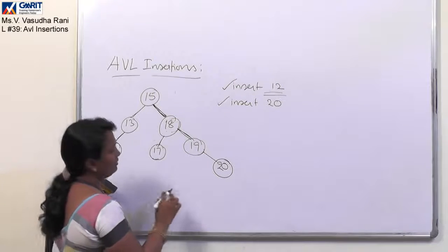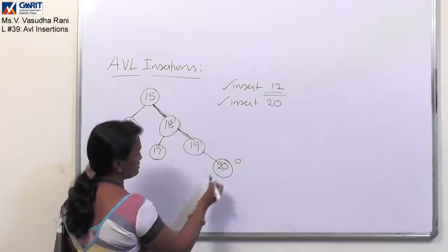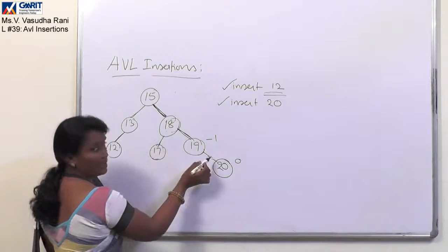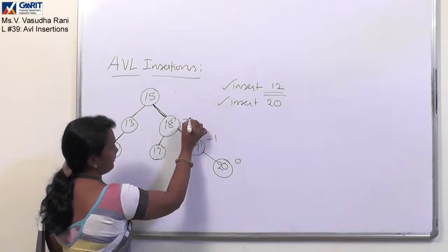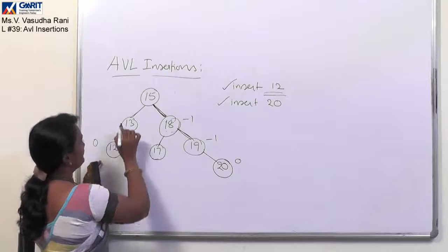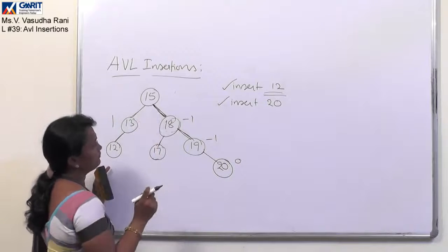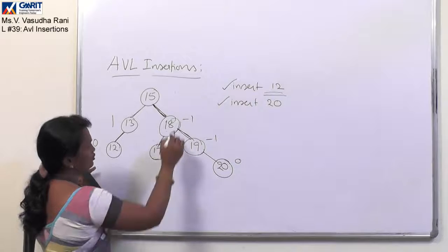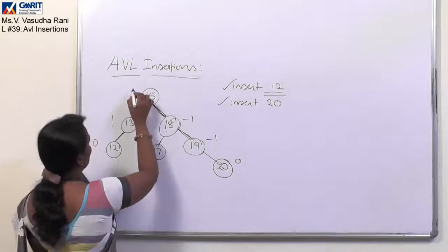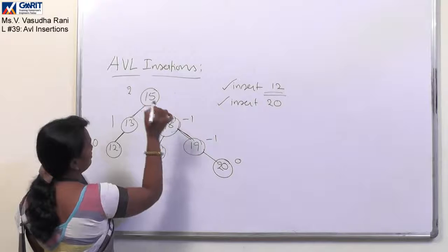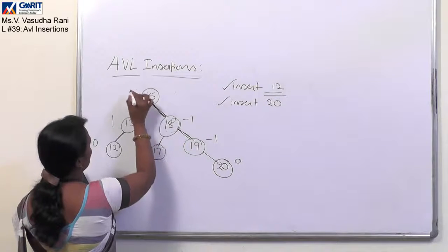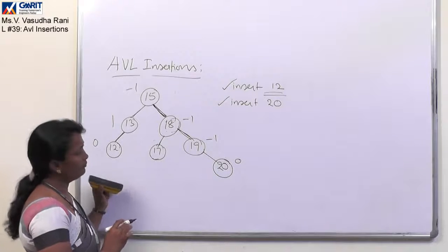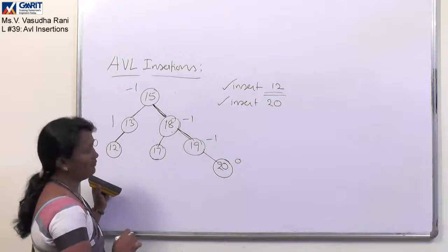Now let us see the AVL balance factors for all the nodes. Here it is 0. Here it is 1 minus 0 minus 1. It is minus 1. For 18 it is 1 minus 2, it is minus 1. Here 12 it is 0, 13 it is 1, and 15 - at 15 here the height is 2 and here the height is 3. It is 2 minus 3, here it is giving minus 1. So again it is satisfying the balanced condition of the AVL tree.